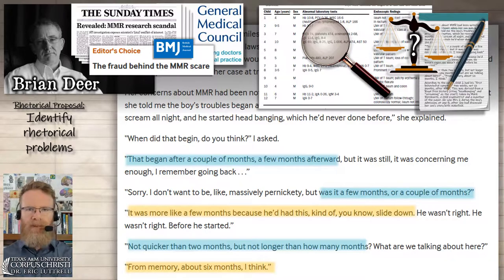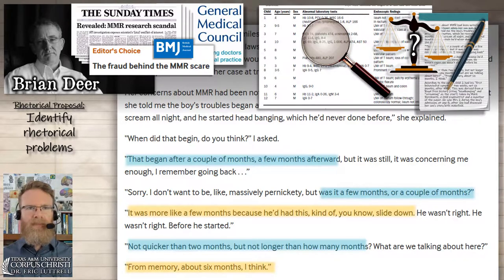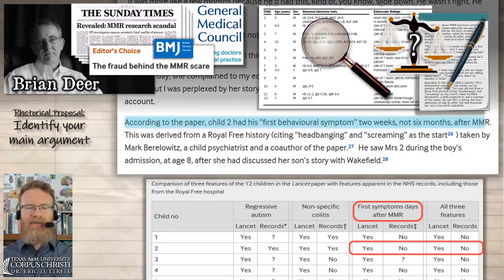She recalled going back to the doctor, and Brian Deere cut her off and said, 'Sorry, I don't mean to be massively pernickety, but was it a few months or a couple of months?' Obviously this is very important because if the MMR vaccine is the cause, then something that happened several months afterwards is not so closely correlated that it could really be an explanation for causation. She clarified it was more like a few months, describing a gradual slide down. Deere pressed further: 'Not quicker than two months, but not longer than how many months?' She said, 'From memory, about six months, I think.'